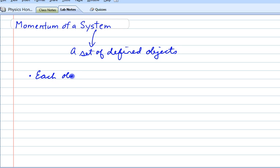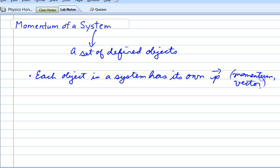Each object in a system has its own momentum, and of course it's a vector, so we have to keep track of that. In order to find the total momentum, we'll write that as P_tot.